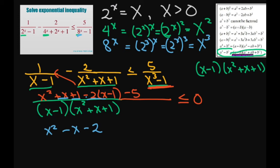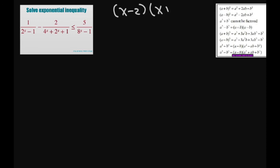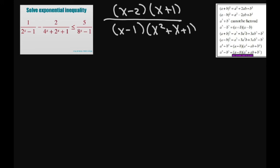So basically we have the numerator X squared minus X minus 2 over the common denominator (X minus 1)(X squared plus X plus 1), all less than or equal to 0. Factoring the numerator, I'm going to get (X minus 2)(X plus 1) divided by (X minus 1)(X squared plus X plus 1), all less than or equal to 0. Remember, all these should be big X's.